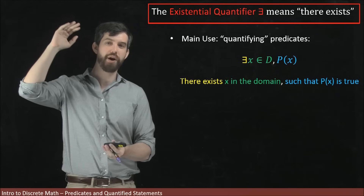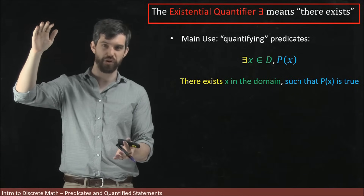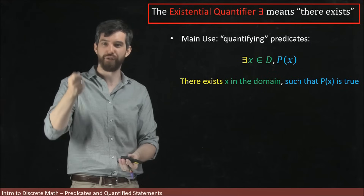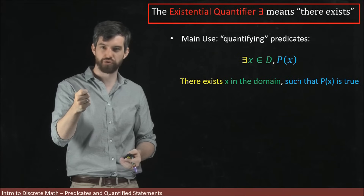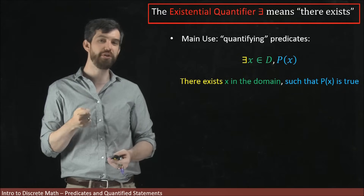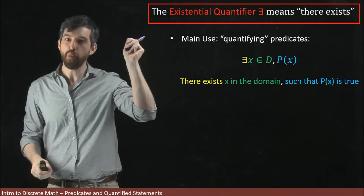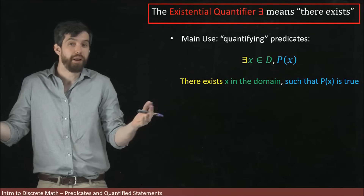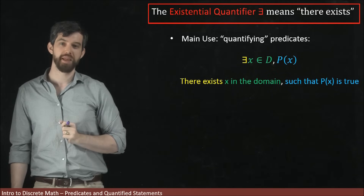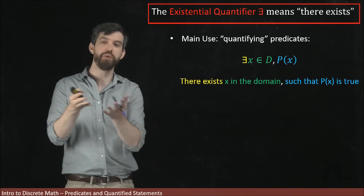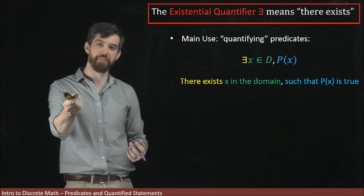Those are two extreme cases: one where every input is true — where we use the 'for all' — and one where none of them is true, where we might also use 'for all X in the domain, this thing is false.' For ones in the middle, where there's at least one which is going to be true, that's when we use the existential quantifier. It says there is at least one thing in the domain — might be more, might be a lot more — but there exists an X where the property is going to be true.